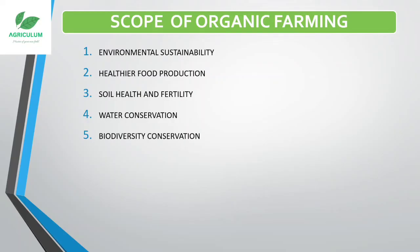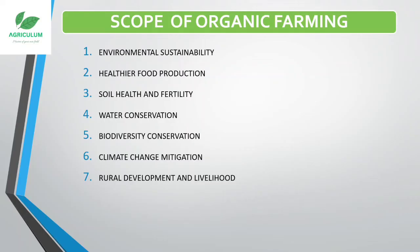The fifth scope is biodiversity conservation — organic farming supports biodiversity by creating habitats for insects, birds, and wildlife, enhancing ecosystem services like pollination and natural pest control. The sixth is climate change mitigation — organic farming practices can reduce greenhouse gas emissions and enhance carbon storage.